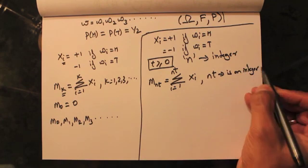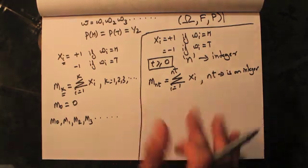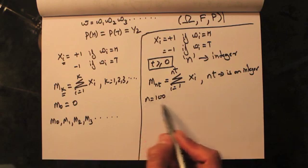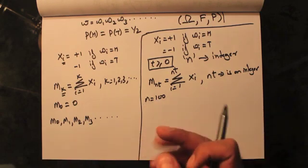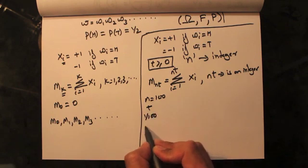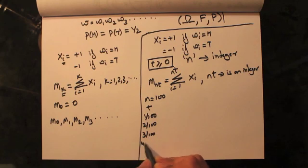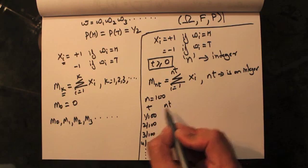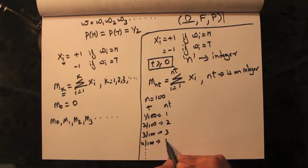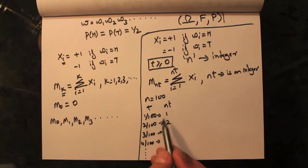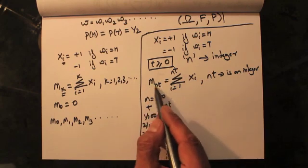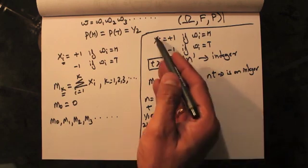Let me explain how this works. Let's fix n equal to 100. We then look for those times t where nt is an integer. For example, if t is 1/100, 2/100, 3/100, 4/100, and so on, then n multiplied by t gives 1, 2, 3, 4, and so on. For all these times, nt is an integer and we can calculate m of nt using the formula. To calculate m of nt, we need to know the x of i values, which depend on the coin tosses.